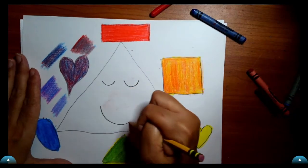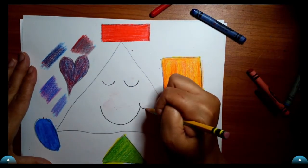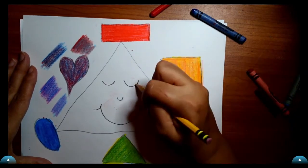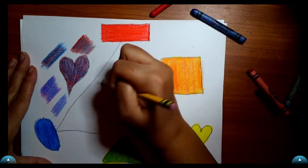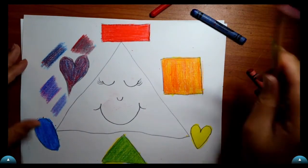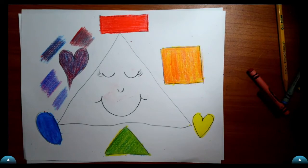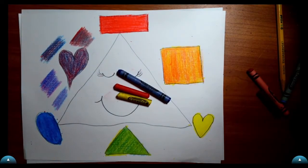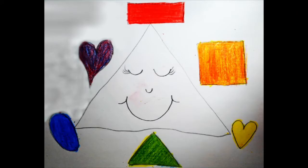And then anything else you would like to add, you can turn your little triangle into something. You can add a face or you can add more decorations. But all you need to do is turn in your picture of your mixed colors of how we made the secondary colors in our color wheel. And we only use the primary colors and the secondary colors. Have fun!